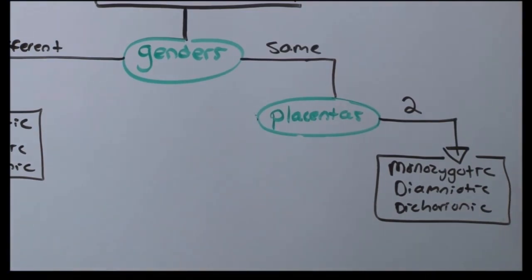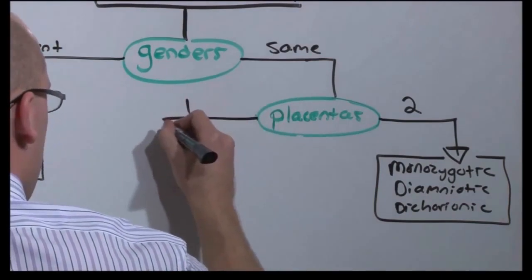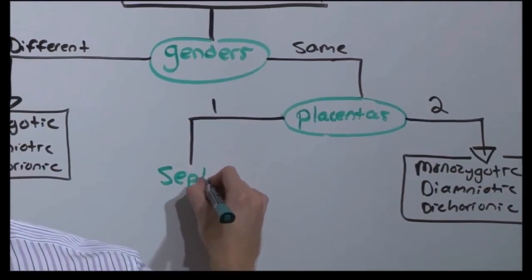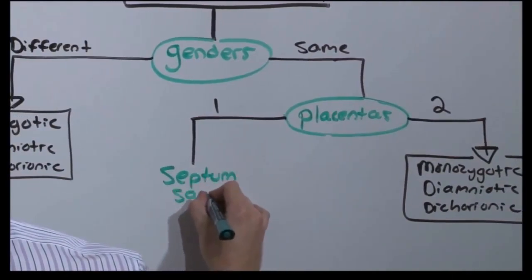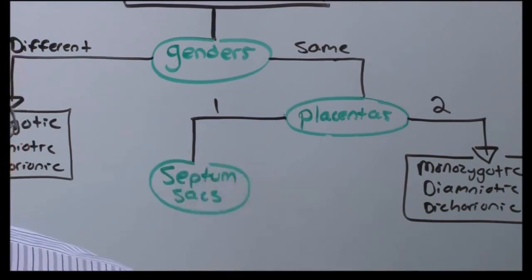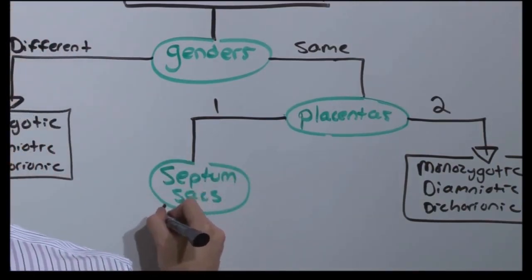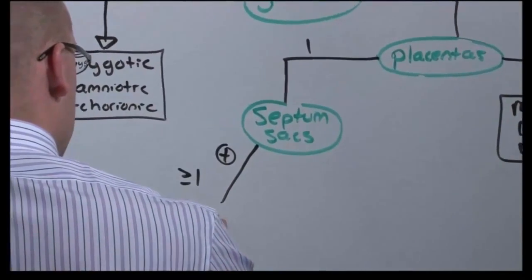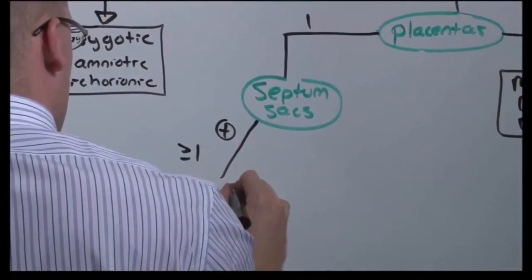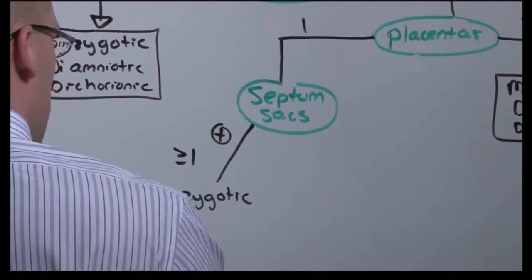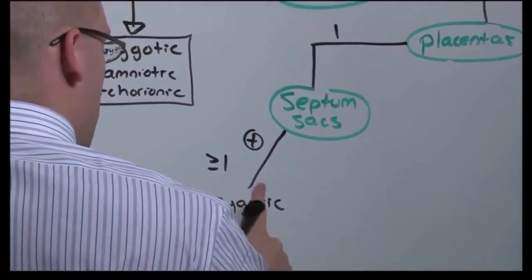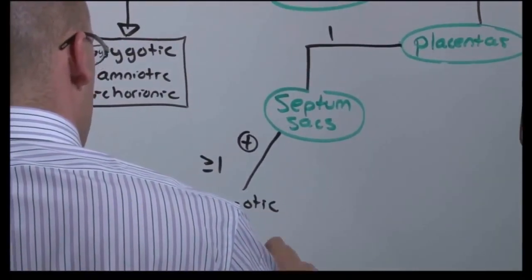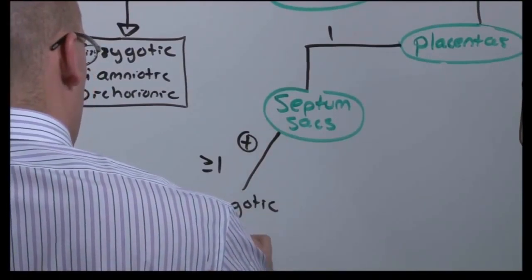But if you have only one placenta, that is, both share the same placenta, you need to look for a septum. What you're doing is looking for a number of sacs. If there is a septum, that is, there's more than one sac, then there at least must be monozygosity. You cannot share the same placenta without being split from the same egg. And because there are separate sacs, they are diamniotic. They share the same placenta, so they're monochorionic.